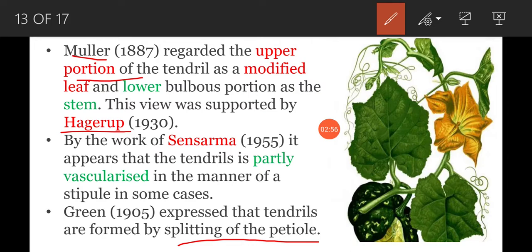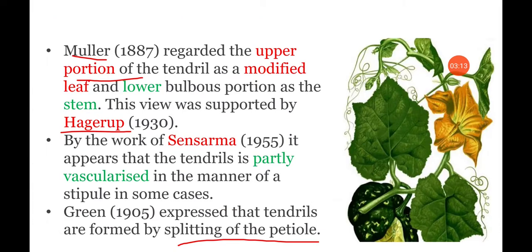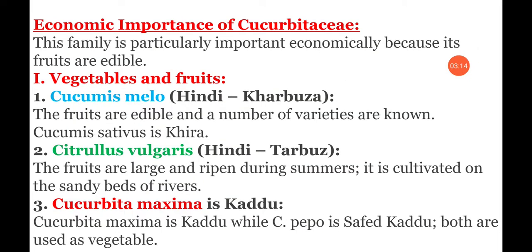This is about the morphology of tendrils — it is very important from an examination point of view. Now, coming to the economic importance of Cucurbitaceae, the family members are mainly useful as edible fruits and vegetables.